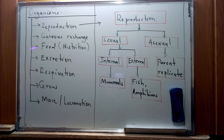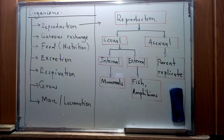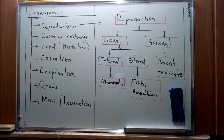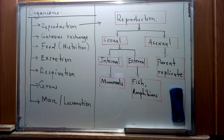Living organisms display nutrition, whereby they take in food and convert it into energy and other vital nutrients required to support life. Next, there is excretion, whereby living organisms remove waste and excess water from the body, which we'll look at under excretion and homeostasis. Living organisms also display respiration, which is a biochemical process by which cells obtain energy by combining oxygen and glucose, resulting in the production of carbon dioxide, water, and ATP — adenosine triphosphate.